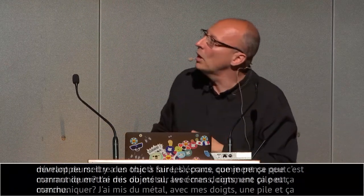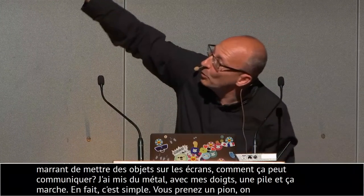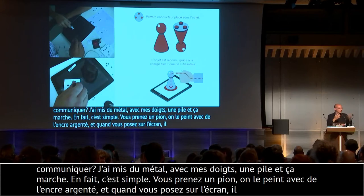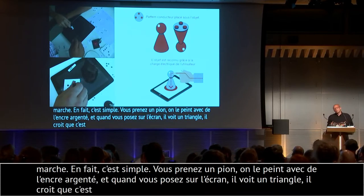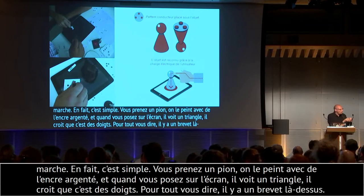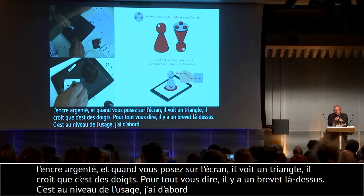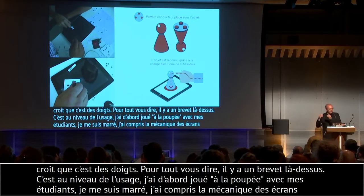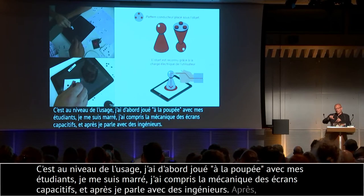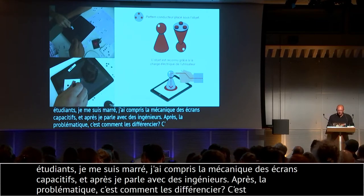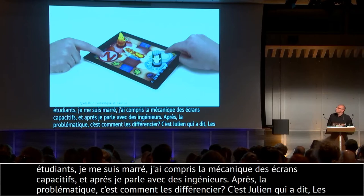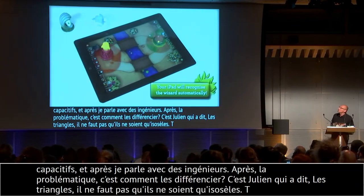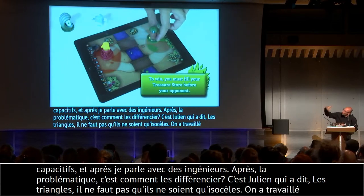C'est simple : vous prenez un petit pion, on le peint avec de l'encre argentée, dessous on met un ou deux ou trois picots. Quand vous posez l'objet sur l'écran, lui voit un triangle — il croit que c'est des doigts. Suivant la position et la forme du triangle, on sait que c'est le point 1, 2, 3, 4, plus la position et la rotation en temps réel. Il y a un brevet là-dessus. Julien m'a dit : ça serait bien que les triangles ne soient pas qu'isocèles mais qu'on ait plein de triangles différents. On a travaillé pour Hasbro — le plus gros constructeur de jouets au monde — pour l'iPad 1, on a sorti des jeux avec eux.